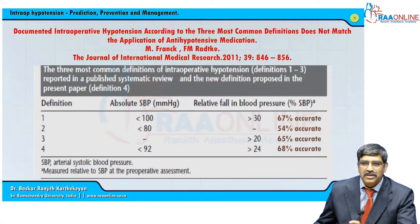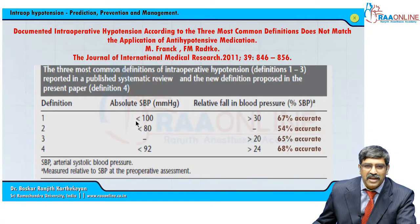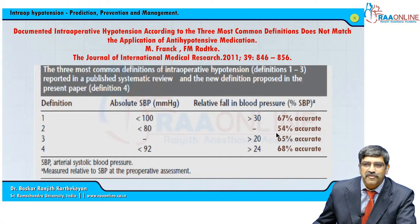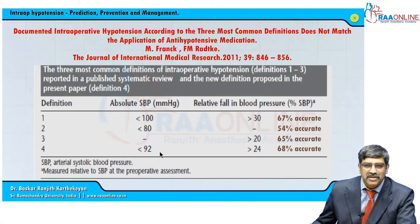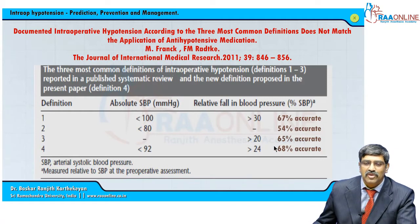What is the accuracy of these measurements? If you take less than 100 and greater than 30 percent fall from baseline, it is 67 percent accurate. If it is less than 80, it is 54 percent accurate. If you take a fall of 20 percent from the baseline, it is 65 percent accurate. A fourth definition has been added: less than 92 mmHg or a fall of 20 to 24 percent from the baseline, which is the most accurate at 68 percent.